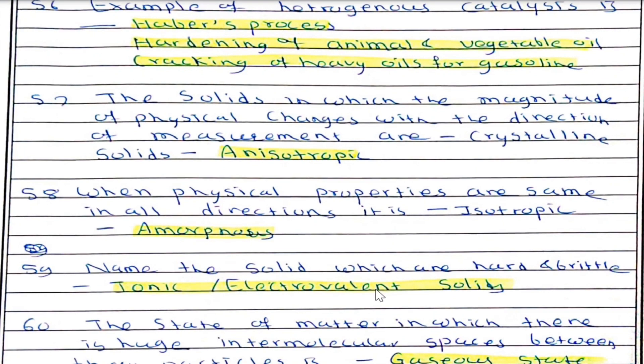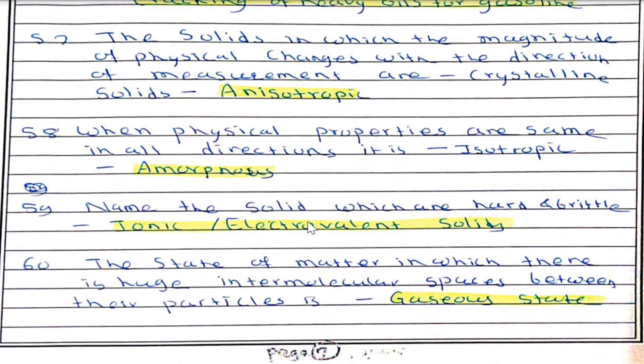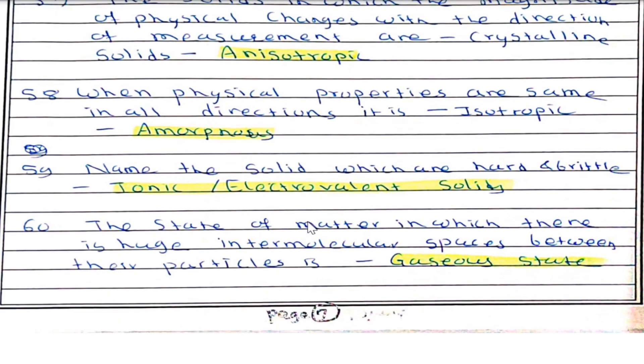Solids in which the magnitude of physical properties changes with the direction of measurement are crystalline solids, also known as anisotropic. When physical properties are the same in all directions, it is isotropic — amorphous solids are an example of isotropic. Electrovalent solids are hard and brittle.